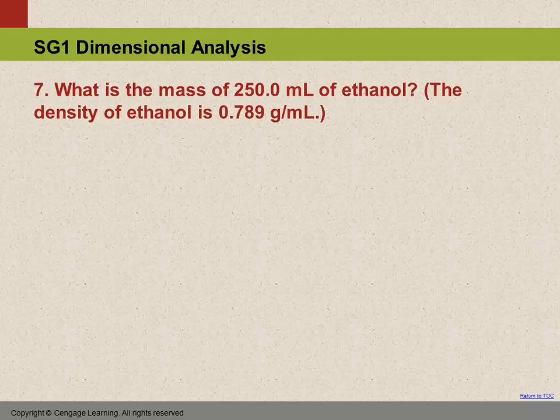Okay, question number seven. What is the mass of 250.0 milliliters of ethanol? The density of ethanol is 0.789 grams per milliliter.